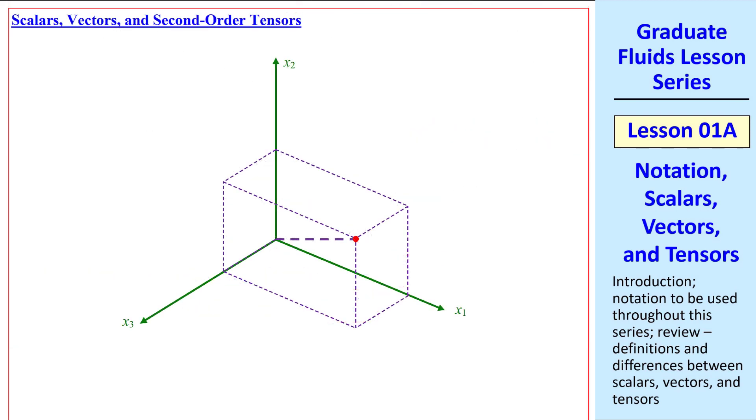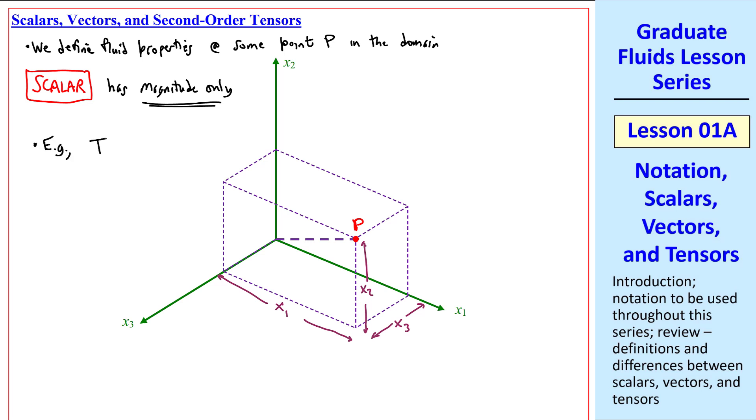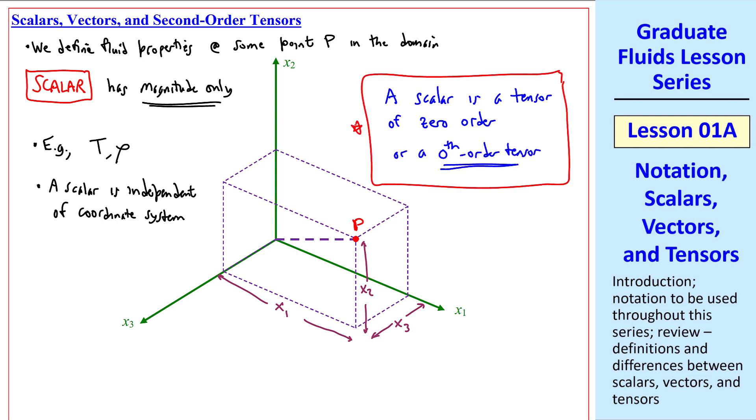Now let's define and discuss scalars, vectors, and second-order tensors. We'll do this in Cartesian coordinates x1, x2, and x3. We always define fluid properties at some point p in the domain. Here's my point p in my diagram. This distance would be x1, x2, and x3. A scalar property has a magnitude only. There's no kind of direction. For example, temperature is a scalar that we would define at this point p. Density is another scalar quantity. A scalar is independent of a coordinate system. For example, if we rotate these axes, temperature at this physical point in the domain will not change. Mathematically, a scalar is a tensor of zero order, or a zeroth order tensor.